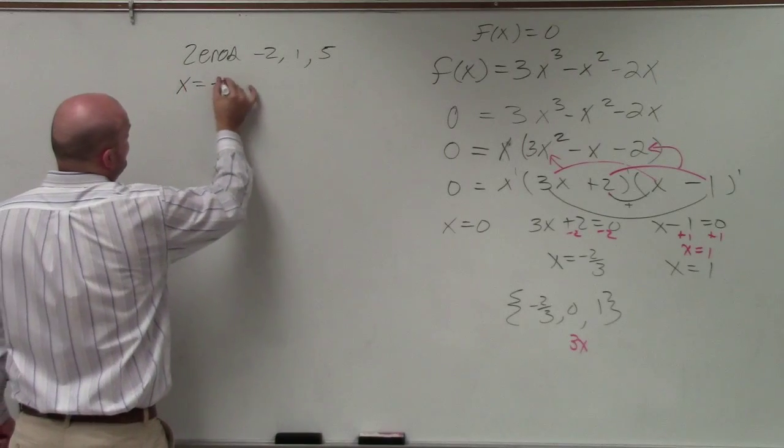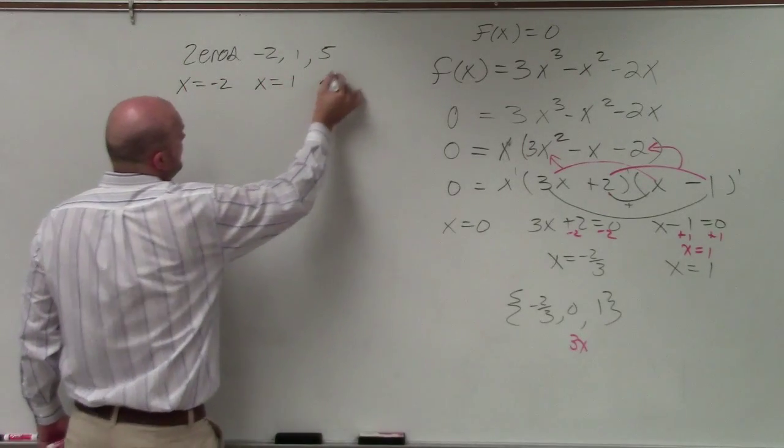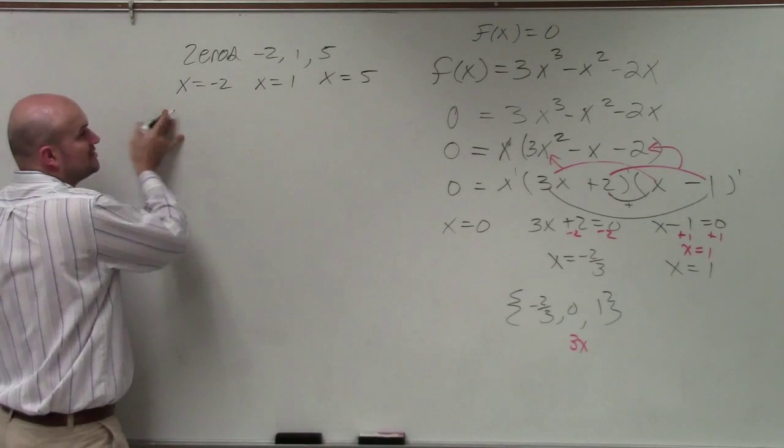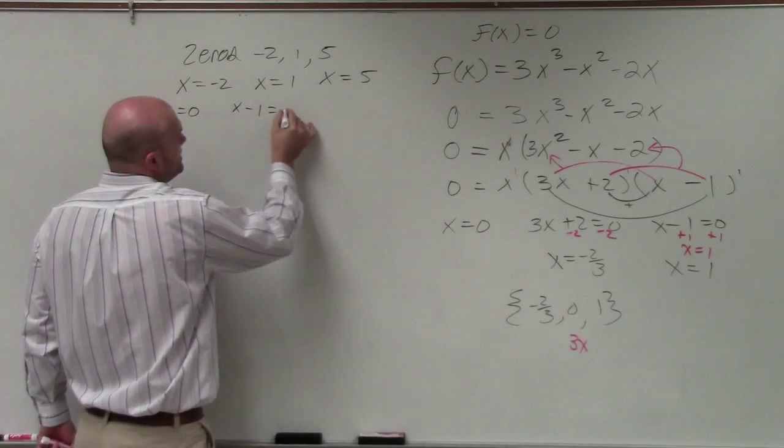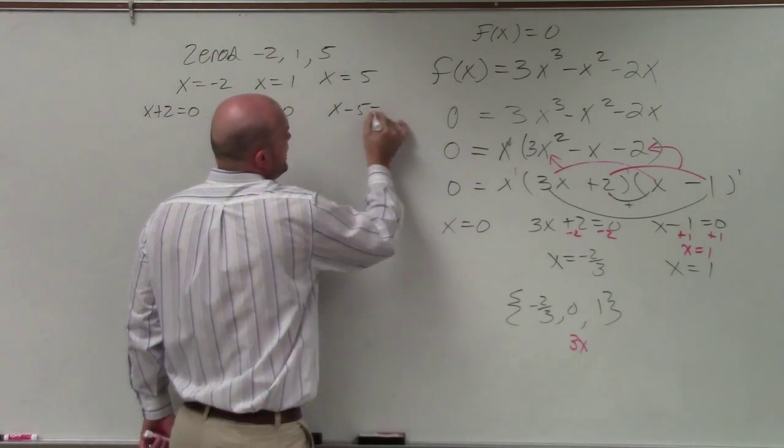So you say x equals negative 2, x equals 1, x equals 5. Set them all equal to 0. So x plus 2 equals 0, x minus 1 equals 0, x minus 5 equals 0.